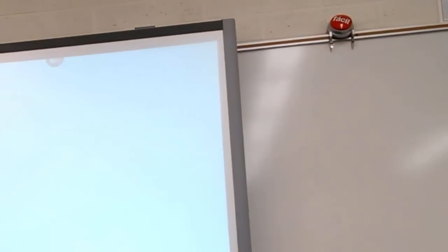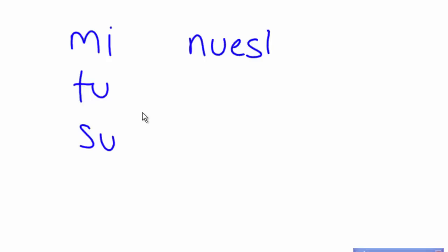Quick review: we talked about possessive adjectives. Mi is mine. Tu, no accent, is your. Su is his, her, or your — talking in the usted form. Nuestro is our, like nuestro libro, nuestra clase. This O can change to nuestra, nuestros, nuestras, and it adjusts according to the thing that's being possessed.